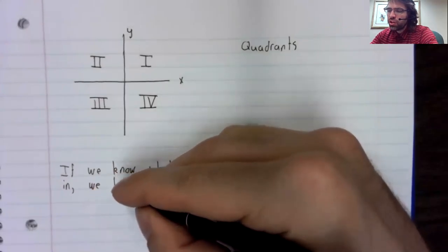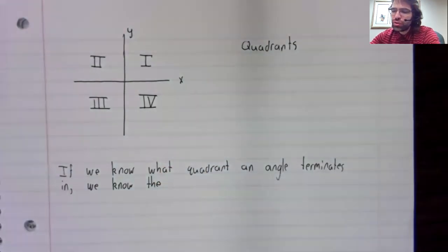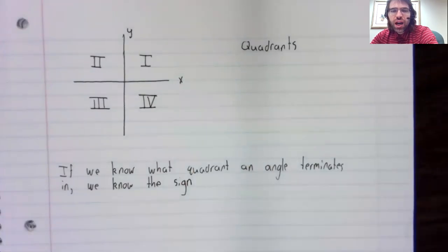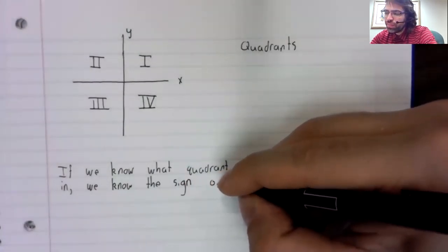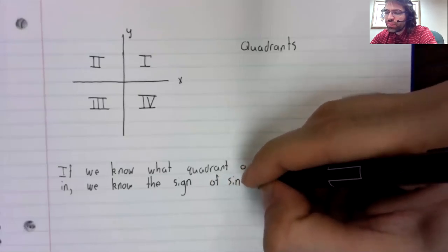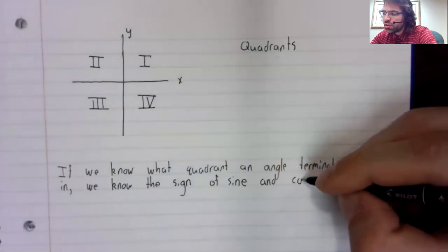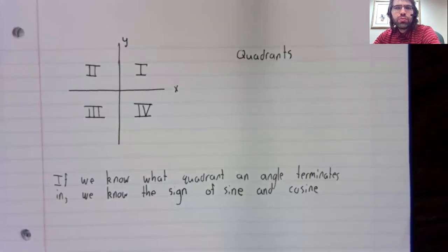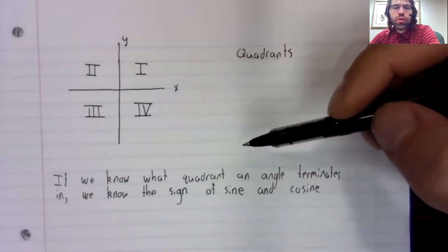We know the sign, S-I-G-N, whether it's positive or negative, of the sine, S-I-N-E, the function, and the cosine. And that's because the sine and the cosine are x and y-coordinates, and the quadrant tells you whether the x and the y-coordinates are positive or negative.